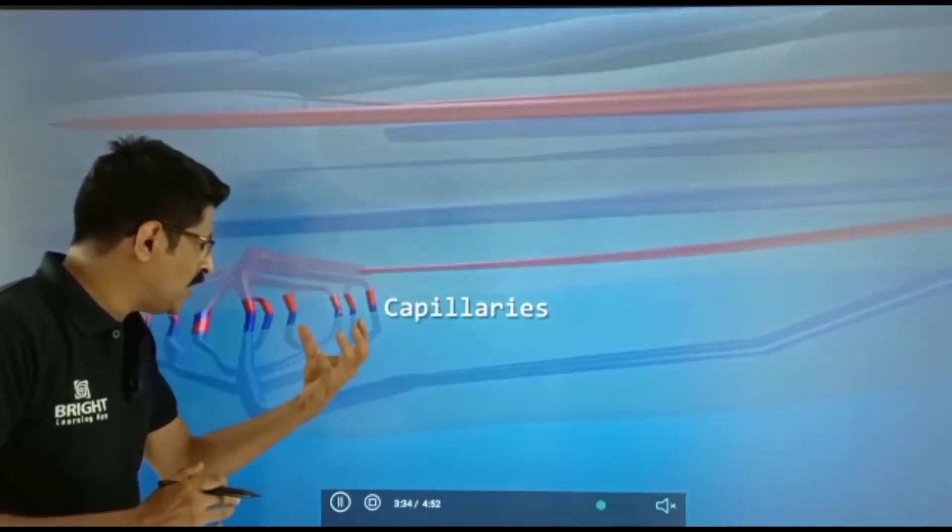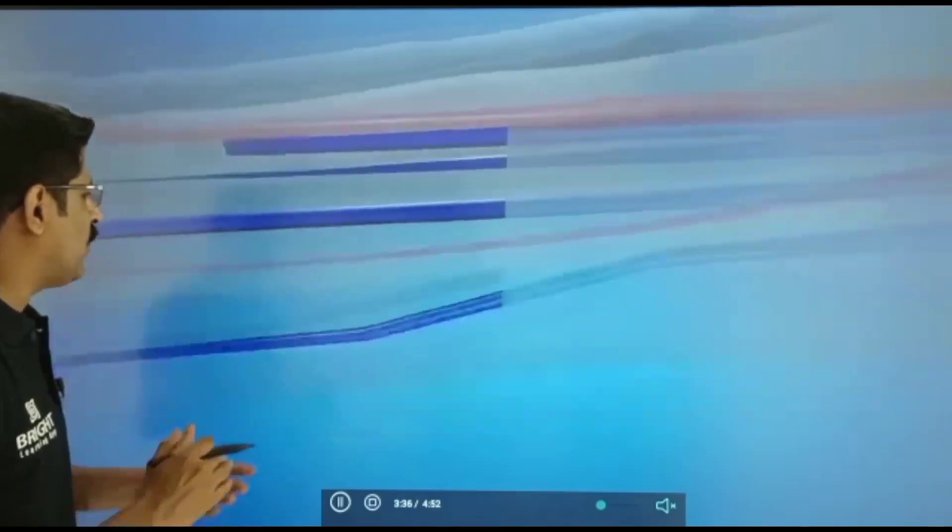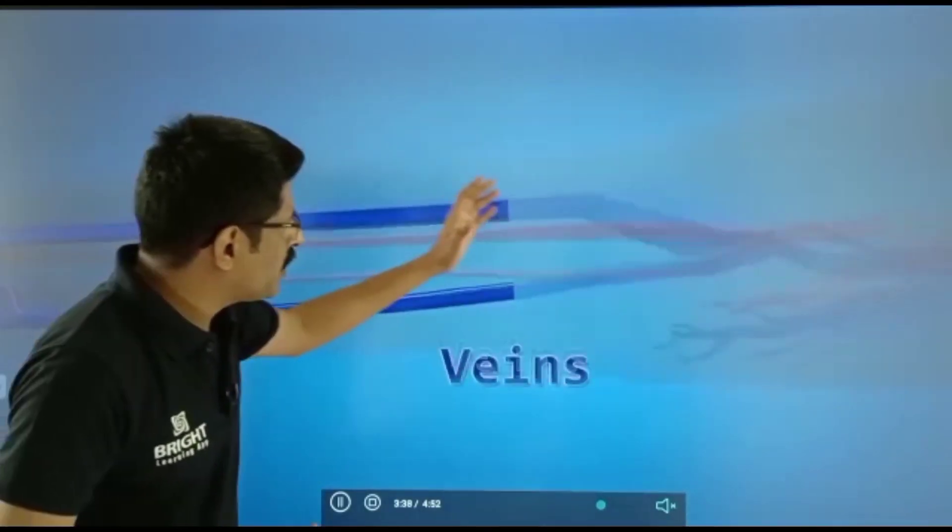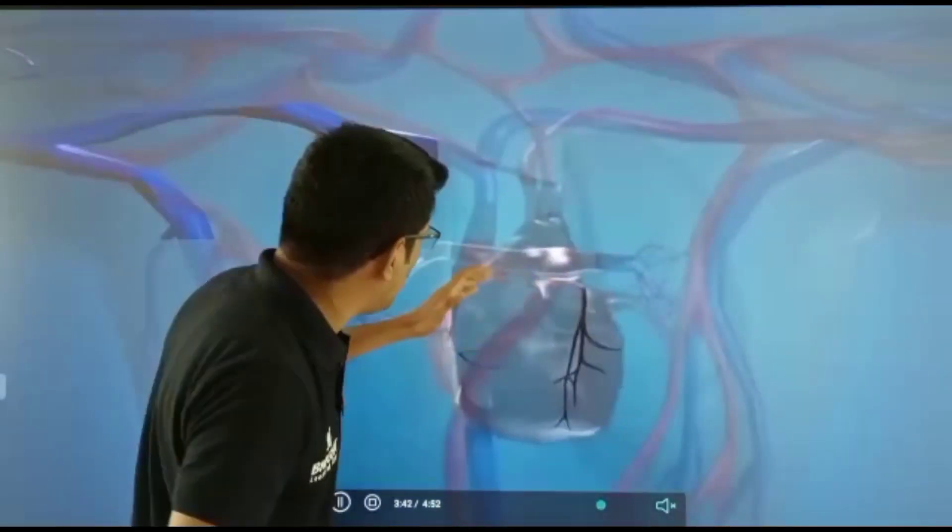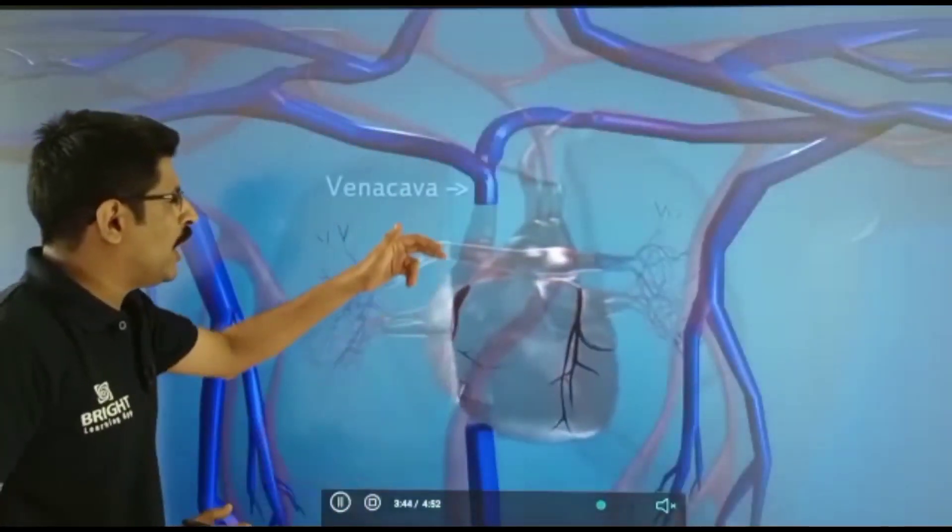As part of metabolic activity, cells produce carbon dioxide and deoxygenated blood. This deoxygenated blood is carried through the veins and reaches the right atrium through the vena cava.